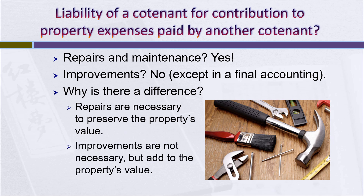On the other hand, improvements are not necessary. They add to the property's value, but they aren't essential to maintaining the property. An improvement might be, for example, adding a room to the property or putting up some structure that wasn't there before. For improvements, there's no liability on the out-of-possession co-tenants unless and until there's a final accounting.